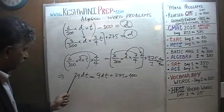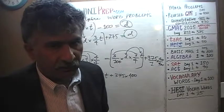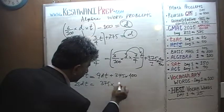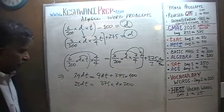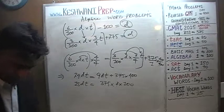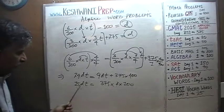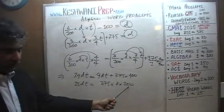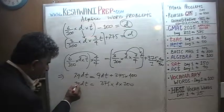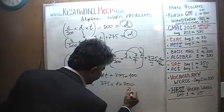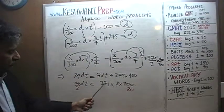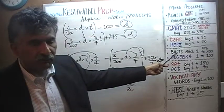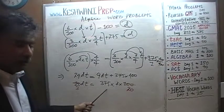Subtracting 9DT from both sides: 24 minus 9 is 15, so 15DT = 375 times 400. I'll write 400 as 4 times 100 to make division easier. Dividing both sides by 5: 15 becomes 3, and 100 becomes 20. Now we need to divide by 3. We know 375 is divisible by 3 because the sum of its digits 3+7+5=15, and 15 is divisible by 3.